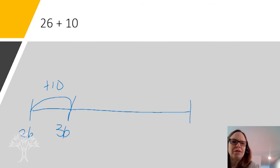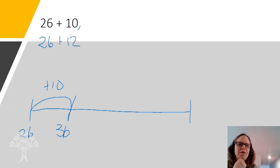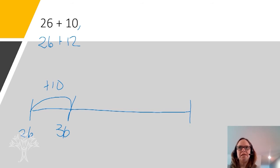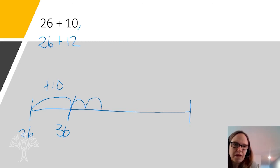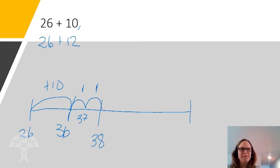Here's another one we're going to look at. What is 26 plus 12? Well, we already did 26 plus 10. How many more are we adding to 10 to get to 12? So we're adding: 36, 37, 38. Did you get 38 for 26 plus 12?